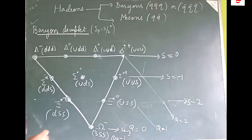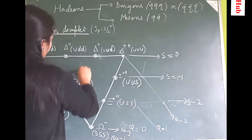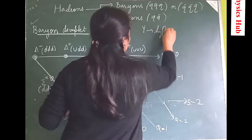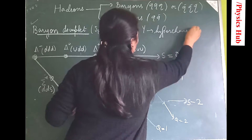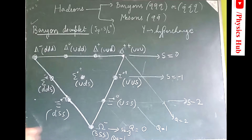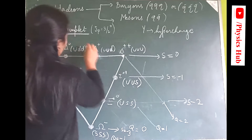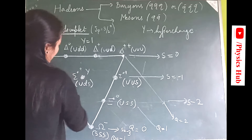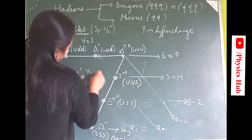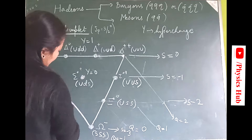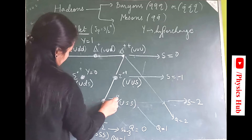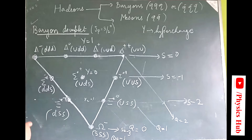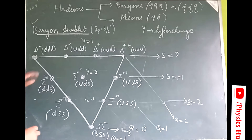We also define hypercharge, given by two times the average charge of the multiplet. For the delta layer the hypercharge is 1, for the sigma layer it is 0, and for the cascade layer it is −1.